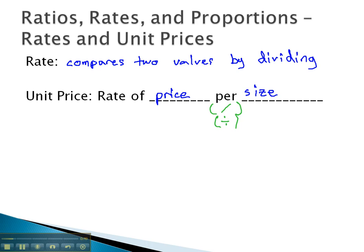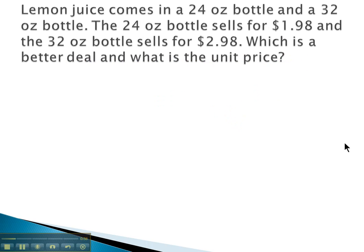A common error with unit prices: students will divide these in the opposite order. It's important the price comes first per size. We want the price per ounce or the price per gallon.